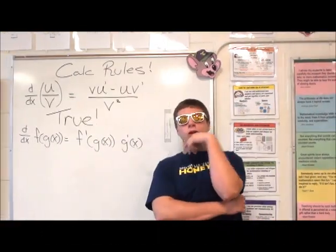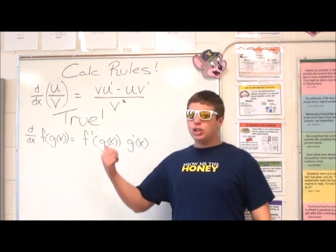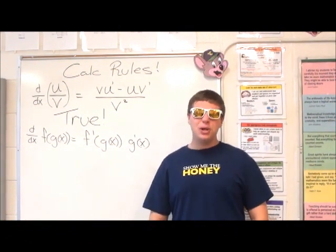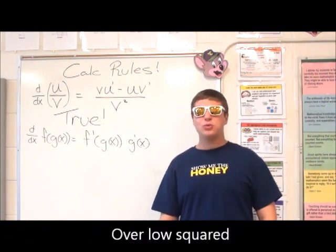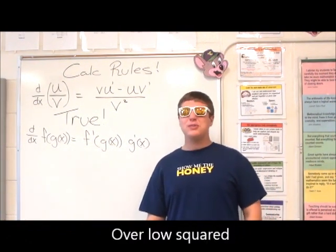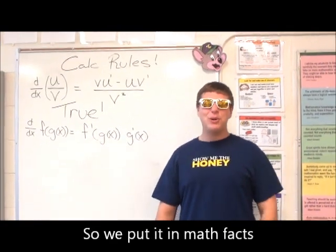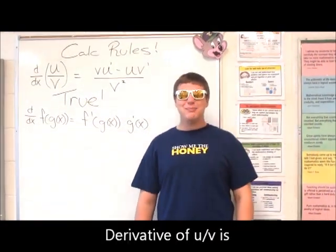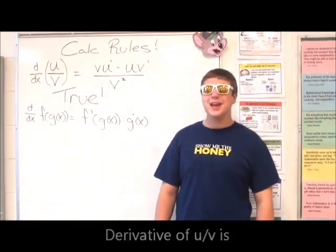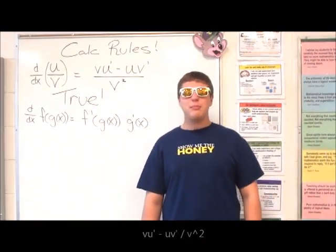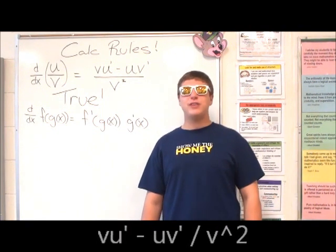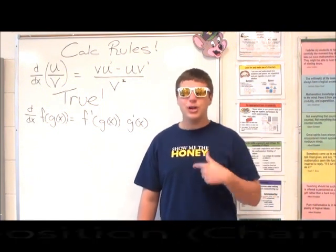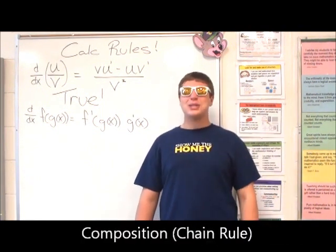Quotient rule — low d high minus high d low, put it over low squared. Now it can be shared. So we put it in math facts: u divided by v — the derivative is v·u prime minus u·v prime, all over v squared.